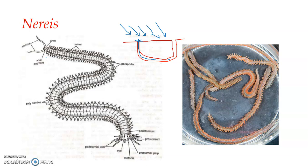During the breeding season, the worm leaves its burrow permanently and actively swims about in the surface layers of water. This happens only when Nereis has attained sexual maturity. During that particular stage, the sexually mature Nereis is known as Heteronereis — we will be looking into its structure in later videos. At this point, the reproductive structures are all well developed in the body.